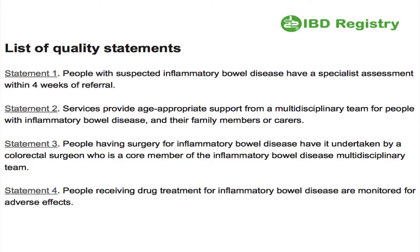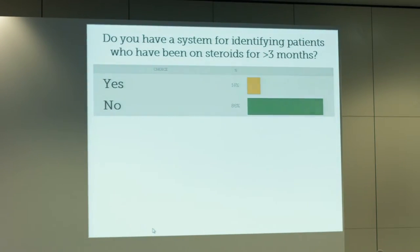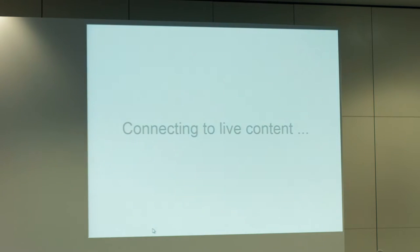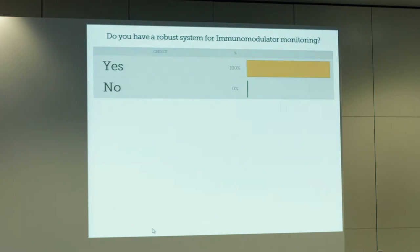Looking at NICE statement four — patients receiving drug treatments for IBD are monitored for adverse effects — here are three simple questions. Do you have a system for identifying patients who have been on steroids for more than three months? And do you have a robust system for immunomodulator monitoring? It's better — we're doing a bit better with this — but it's still about 50-50, which is not great given this is part of our NICE-mandated quality.